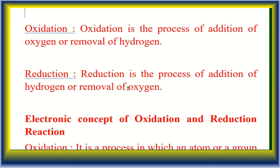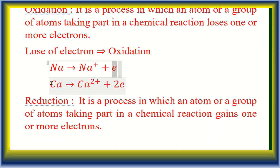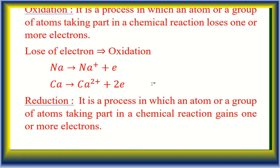In Class 11, I will discuss the electronic concept. Loss of electron is called oxidation. For example, sodium loses one electron and forms Na⁺ ion — one electron is lost, so this is oxidation. Oxidation is a process in which an atom or group of atoms loses one or more electrons.